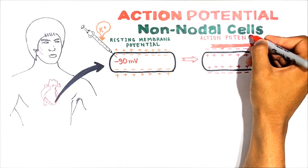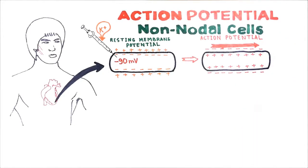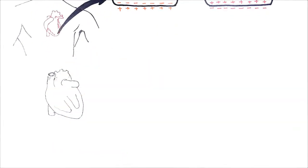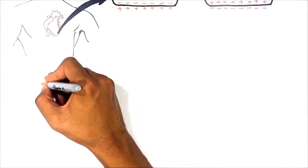In a nutshell, this rapid change in membrane potential which is propagated along the cell is called the action potential. It is very important to note that every muscle in the body must first be stimulated by an electrical impulse before it can contract, and cardiac muscle is not an exception.